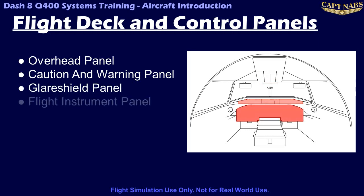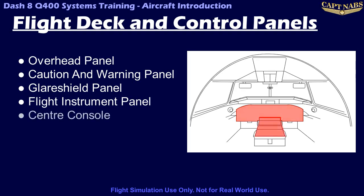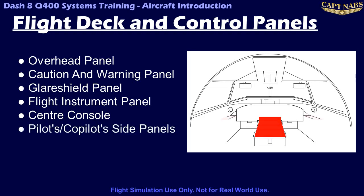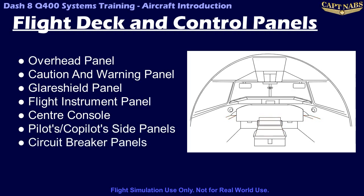The flight instrument panel contains five EFIS displays for flying the aircraft and monitoring aircraft systems. The center console contains engine controls, flight management systems, radio controls, and other controls for the EFIS and AirData computers. The pilots and co-pilot's side panels contain a few control switches. Circuit breaker panels are located on the rear bulkhead of the flight compartment behind each pilot's outboard shoulder.